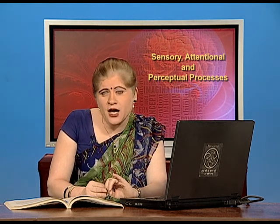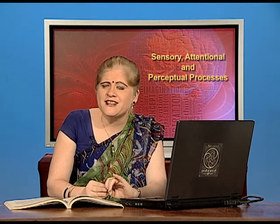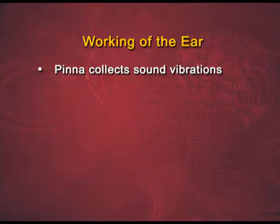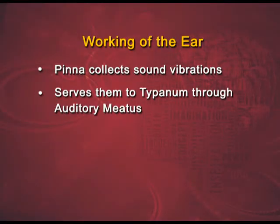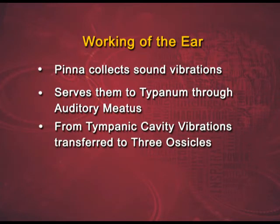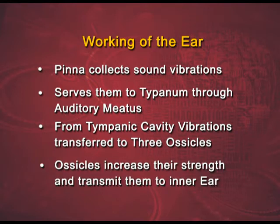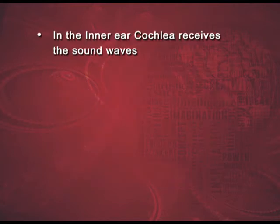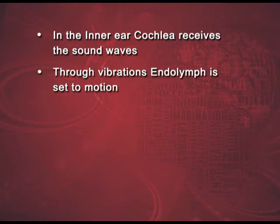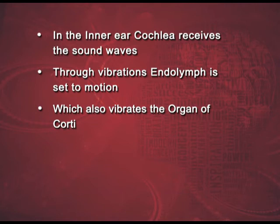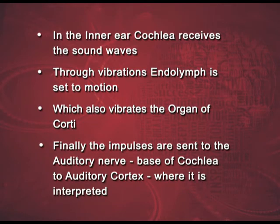How does the human ear work? The pinna collects the sound vibrations and sends them to the tympanum through the auditory meatus. From the tympanic cavity, the vibrations are transmitted to the three ossicles. The ossicles increase their strength and transmit them to the inner ear. In the inner ear, the cochlea receives the sound waves. Through vibrations, the endolymph is set into motion, which also vibrates the organ of Corti. Finally, the impulses are sent to the auditory nerve, which has its base from the cochlea and runs to the auditory cortex in the brain, where it is interpreted.